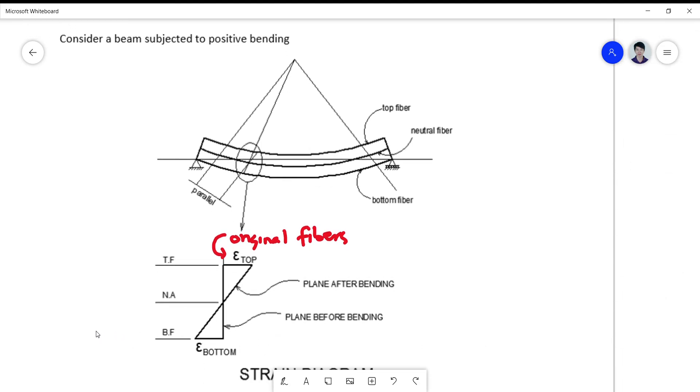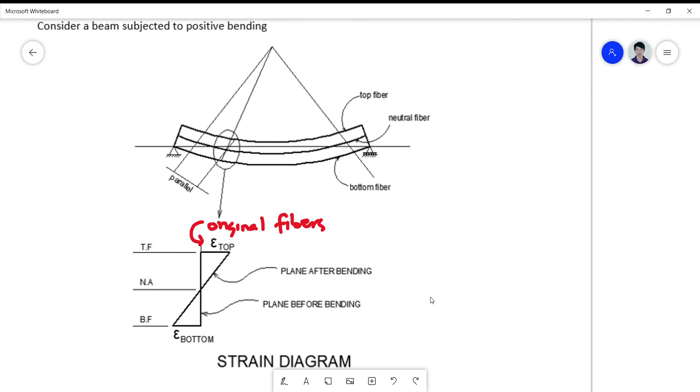So since this is a positive bending, the fibers at the top part is actually in compression. So these fibers here are in compression, and the bottom fiber is in tension. Take note that this is only true when the beam or the member bends in a positive bending.